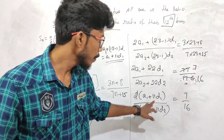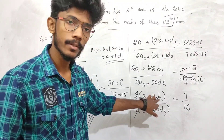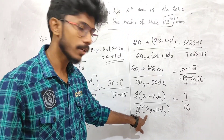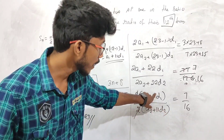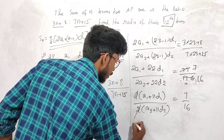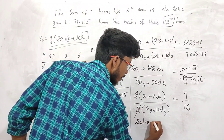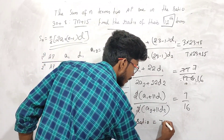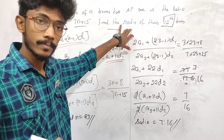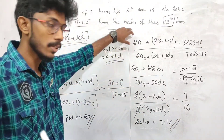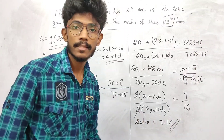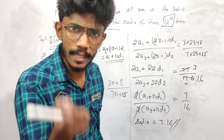We can see that a1 plus 11d1 divided by a2 plus 11d2 gives the ratio 70 by 160, which simplifies to 7 is to 16. So the ratio of the 12th terms is 7 to 16.